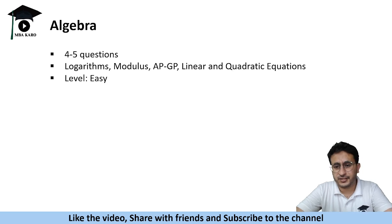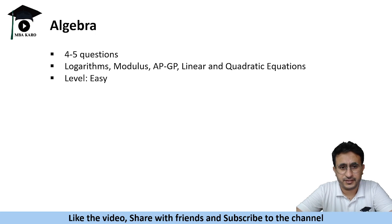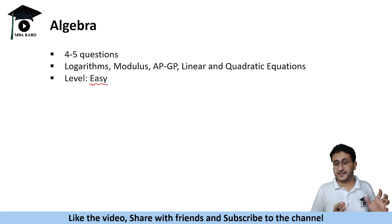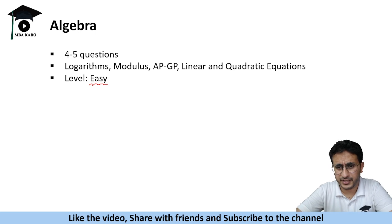Then we talk about the algebra part. Algebra has four to five questions and it has questions on logarithms, modulars, arithmetic and geometric progression, series based questions, linear and quadratic equations. The level of algebra is easy, unlike CAT which has very difficult algebra, it has easy to moderate level. One question might be from logarithms, another could be from linear and quadratic equations, talking about the roots of the equation, sum of the roots, product of the roots. Similarly, arithmetic or geometric progression could be tested. So, four to five questions, relatively easier than CAT.